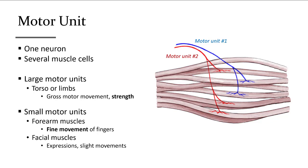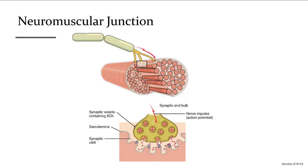Every muscle cell still has its own nerve, but one single nerve can control more than one muscle cell. Areas requiring fine movement and dexterity — such as the fingers or face — have very small motor units for precise control. Areas used primarily for motion or strength have one neuron serving hundreds of muscle cells — these have very large motor units.